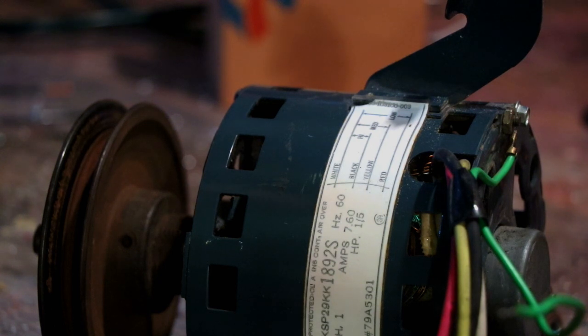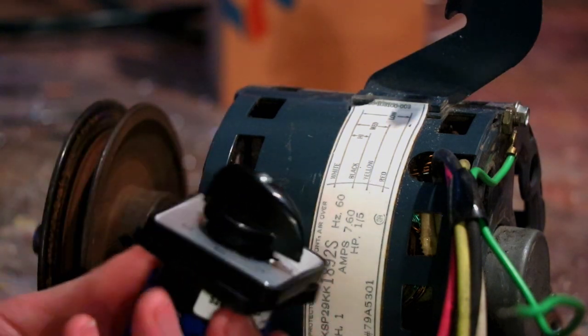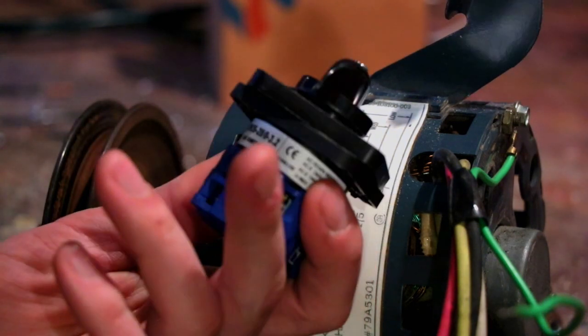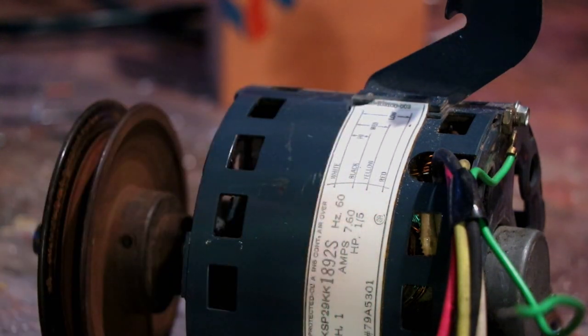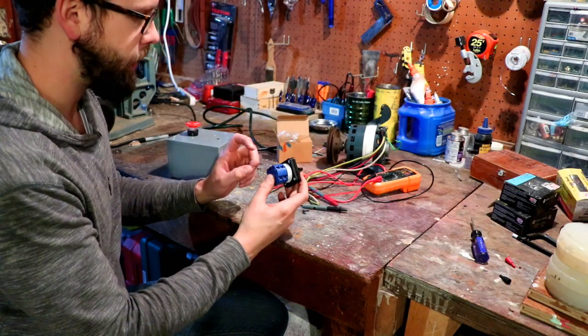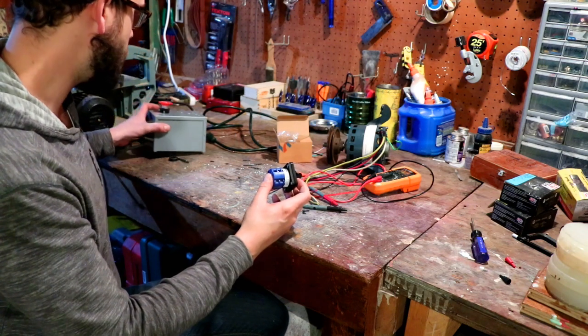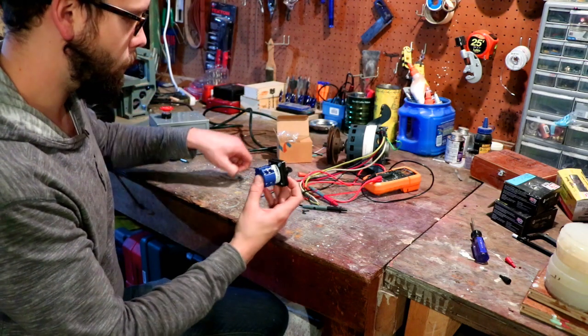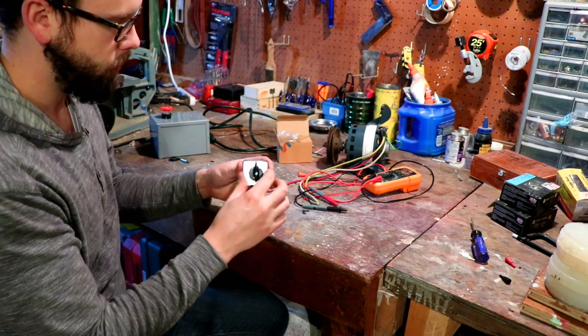So what we're going to do is we're going to use a little rotary cam switch and that way we have the option to switch through each of the speeds for the project that I'm going to use this for. So on my little rotary cam switch, I actually have six poles on here and in reality I only need four poles.